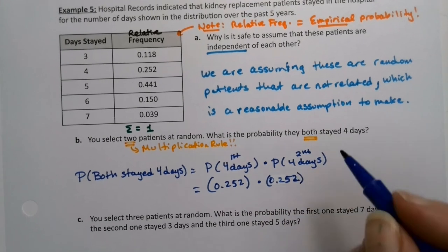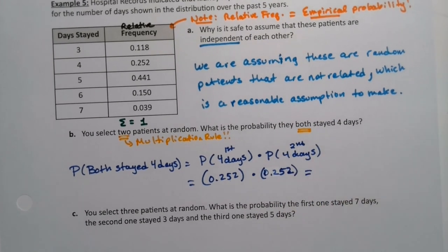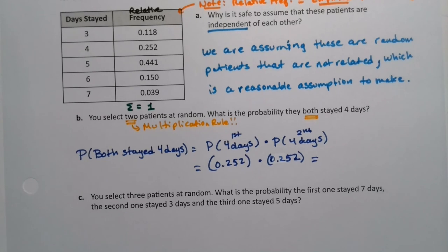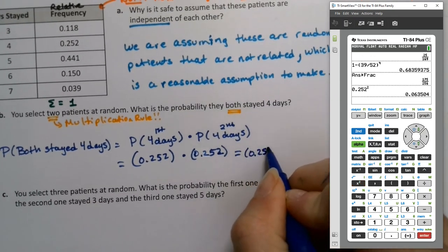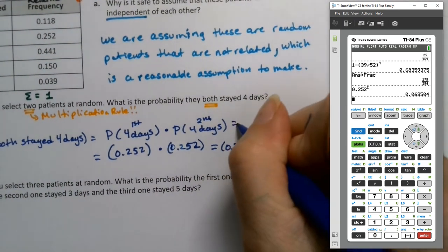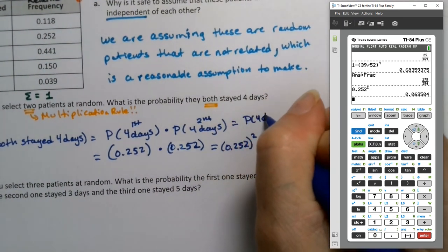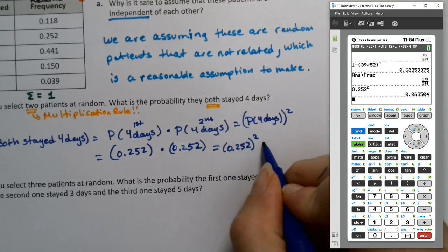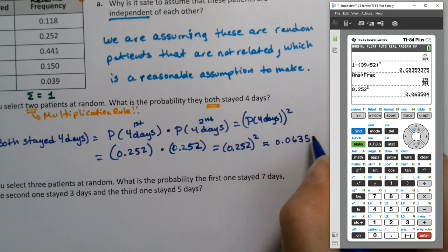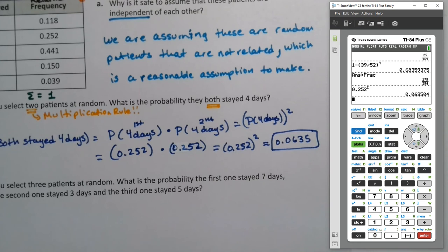I had no space to write 0.252. And then we're going to multiply them. Simple as that, right? Because it has both. Both is an and. It implies the first one and the second one. So let me take 0.252 squared, right? Because when you multiply something by itself, it's squaring it. So if you'd like, you could say 0.252 squared. Heck, you could say the probability of four days squared. That would also work, which gets you 0.0635.